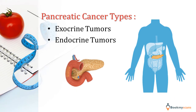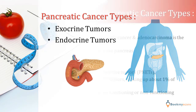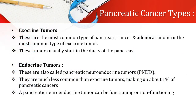There are two types of pancreatic cancer: exocrine tumors and endocrine tumors. Exocrine tumors are the most common type of pancreatic cancer, and adenocarcinoma is the most common type of exocrine tumor. These tumors usually start in the ducts of the pancreas. Endocrine tumors are also called pancreatic neuroendocrine tumors. They are much less common than exocrine tumors, making up about one percent of pancreatic cancers.